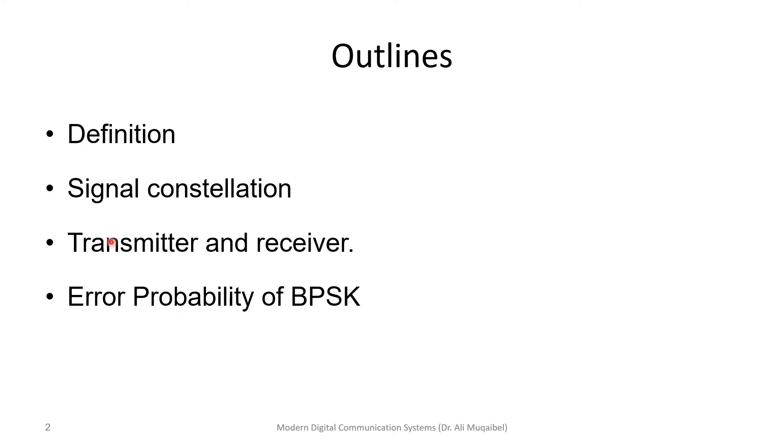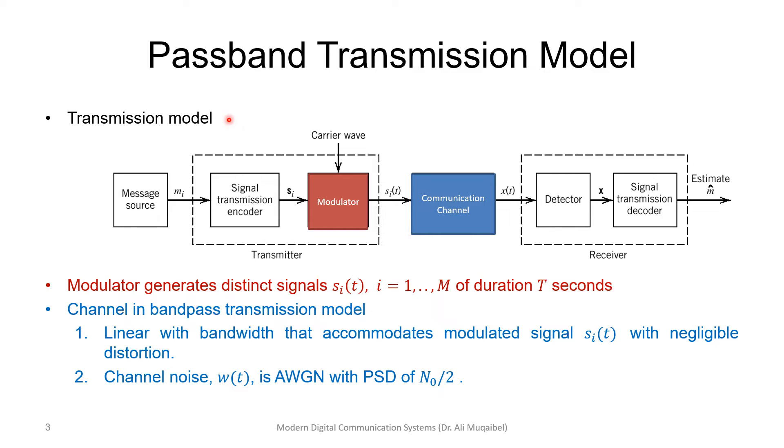So, to understand the error probability, we need to define what is our model. We'll look at the transmitter and the receiver. Here we go. The band-pass transmission model is given by the following. We have a source.